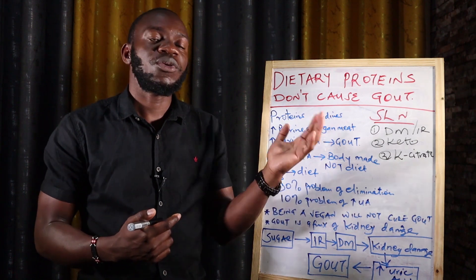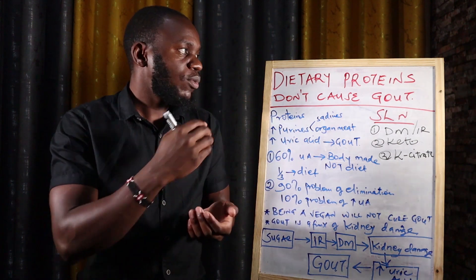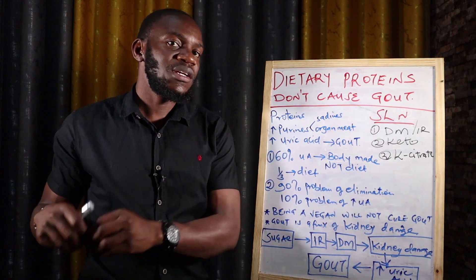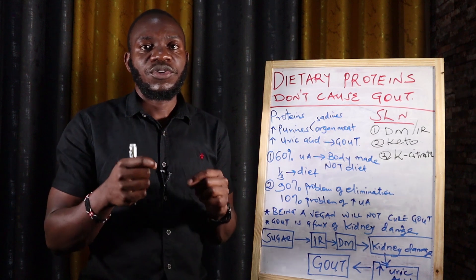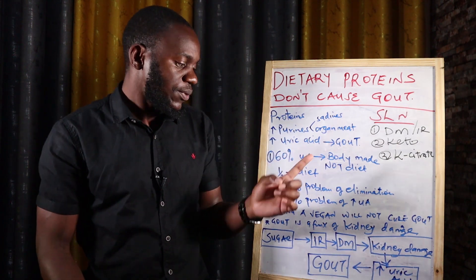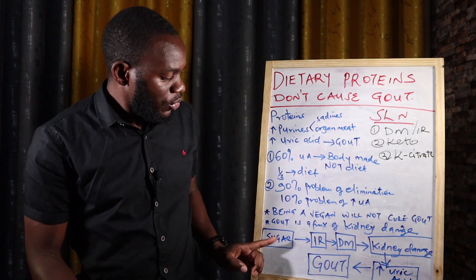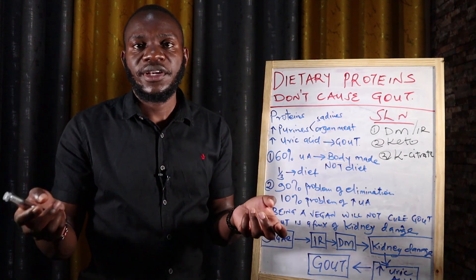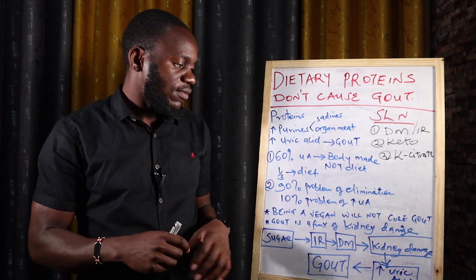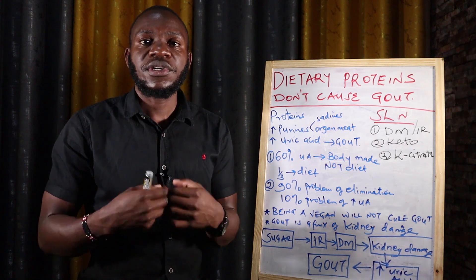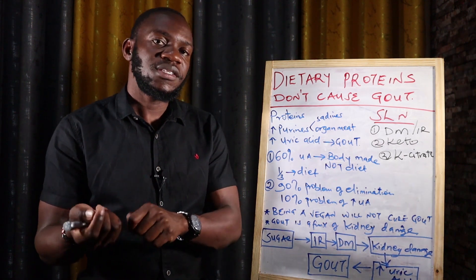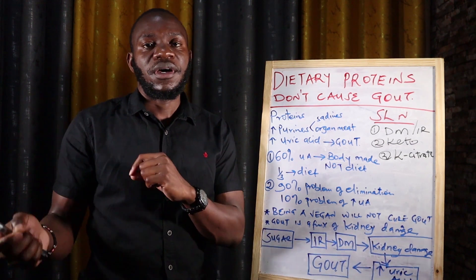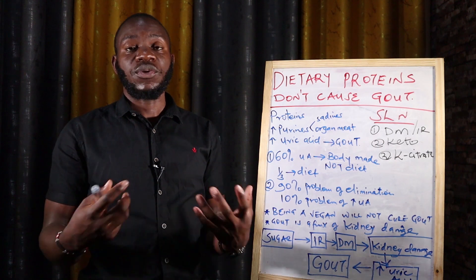When you try to stop uric acid formation by blocking protein intake, that is the wrong approach. If your kidneys are functional, uric acid will be eliminated. But if your kidneys are dysfunctional, even the smallest amount of uric acid will accumulate and cause gout. Sugar is what causes the kidney problem — high consumption of sugar, simple carbohydrates, junk food, seed oils, and wheat products leads to insulin resistance, which destroys the endothelial blood vessels that supply the kidneys.